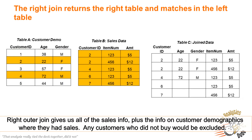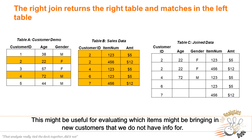Right outer join gives us all of the sales info, plus the info on customer demographics where they had sales. Any customers who did not buy anything would be excluded. This might be useful to identify which items might be bringing in new customers that we do not already have info for.